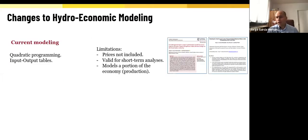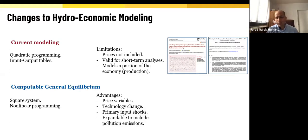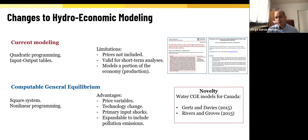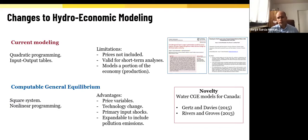So far, we've been using input-output tables and models with quadratic programming. However, this tool has some limitations: prices are not included — and prices are a very important mechanism to compensate supply or demand shocks. They are also only valid for short-term analysis and model only a portion of the economy, namely the industry side. Using this approach, we've produced two papers — one accepted and the other in a second round of revisions. We now want to move to a computable general equilibrium model.